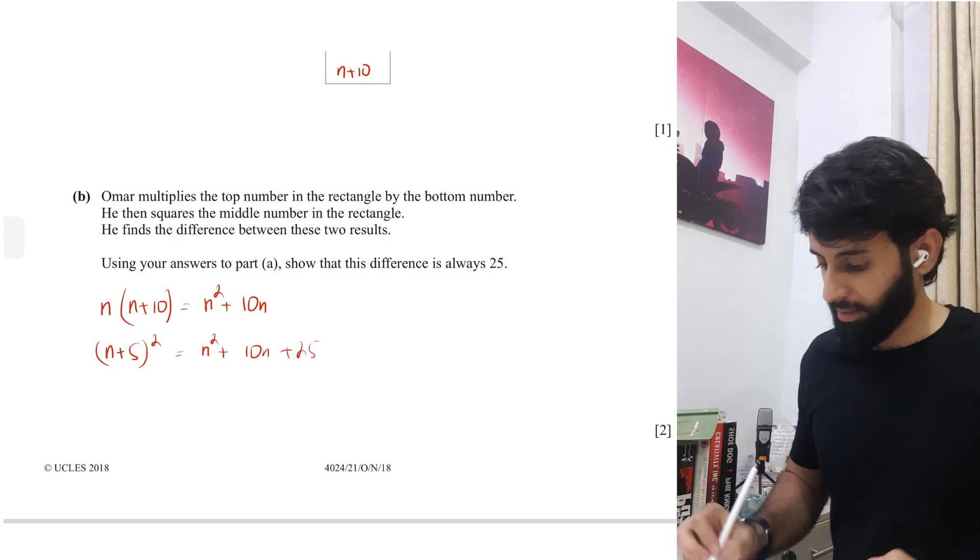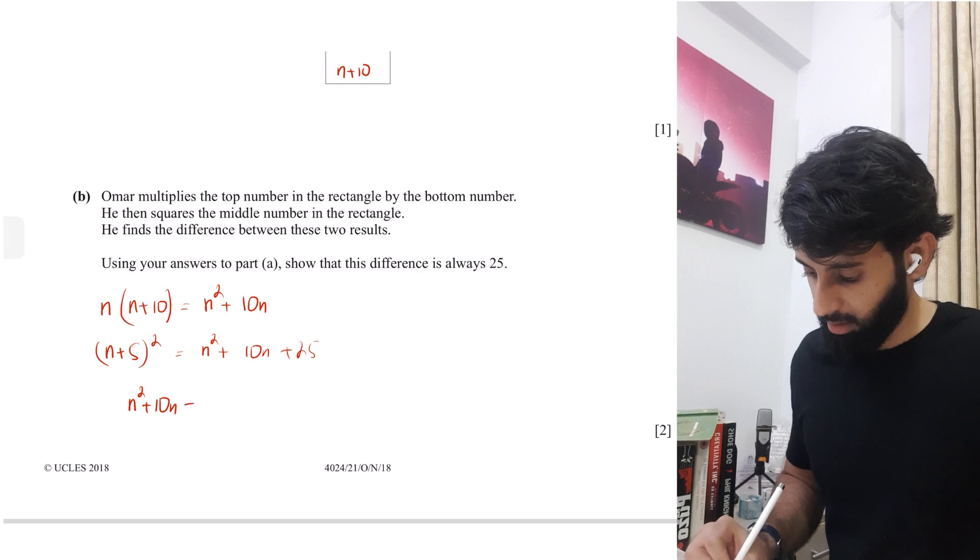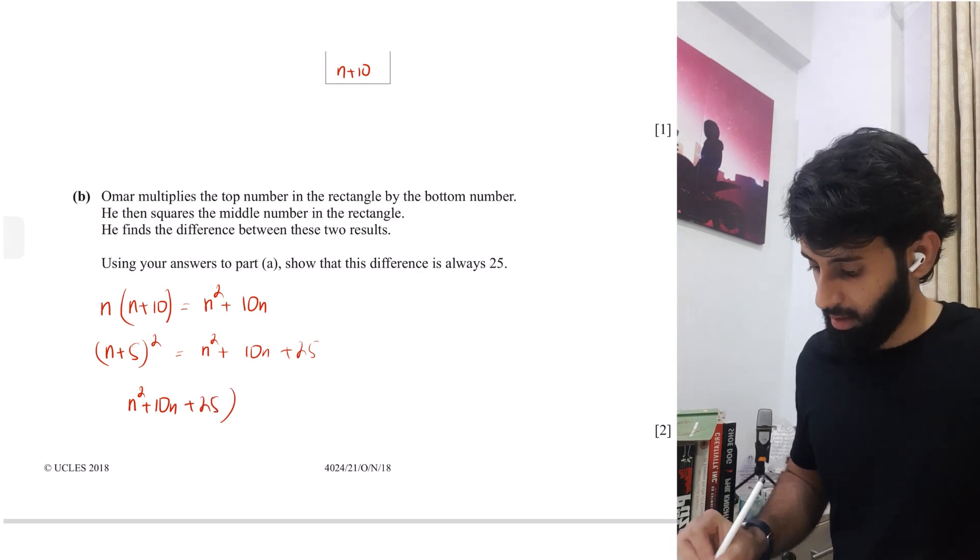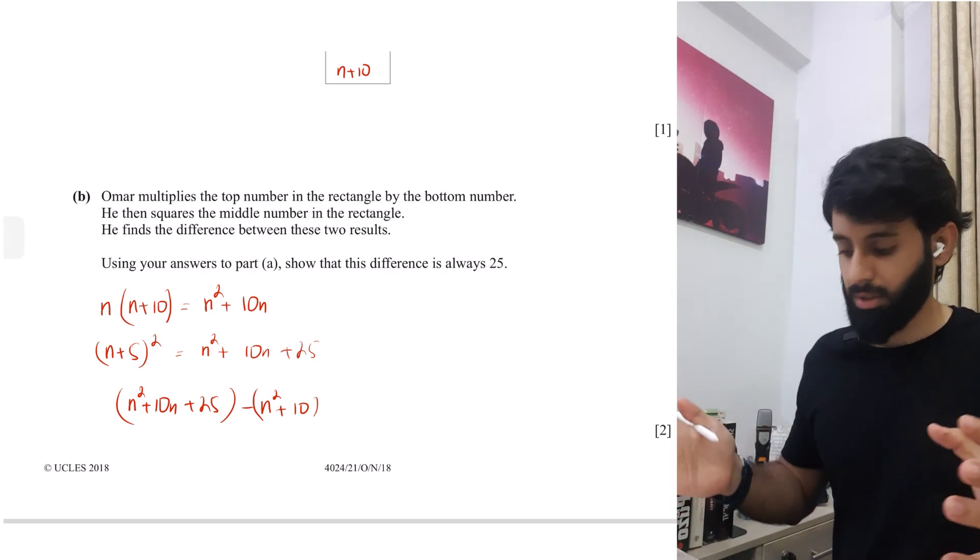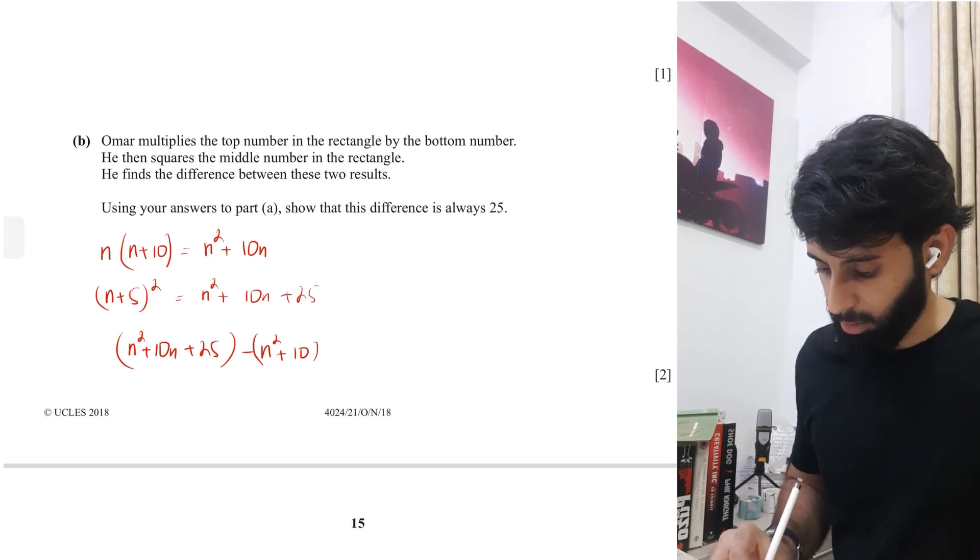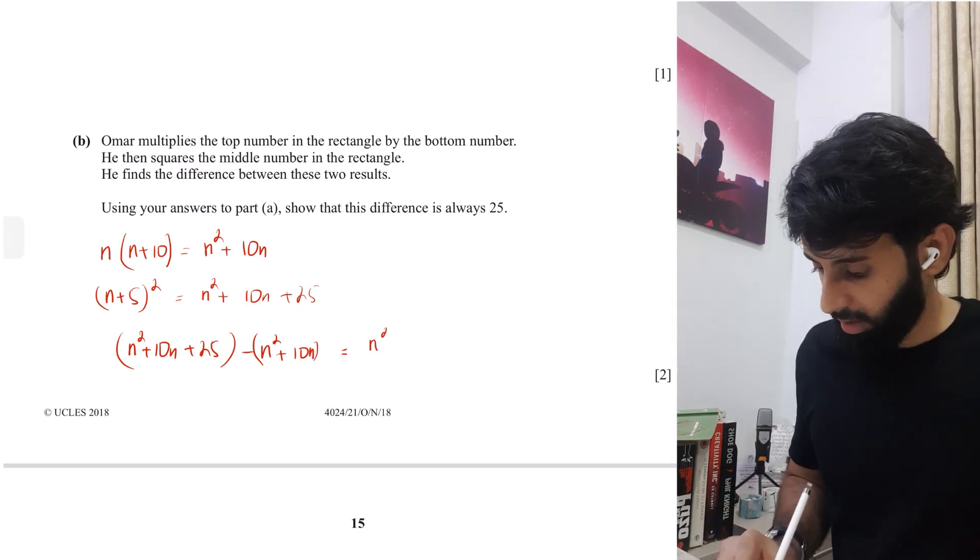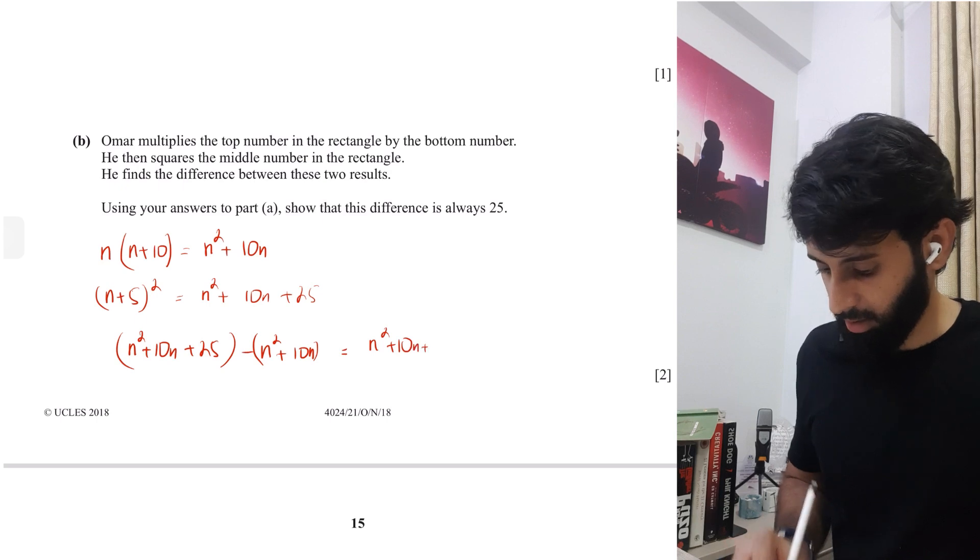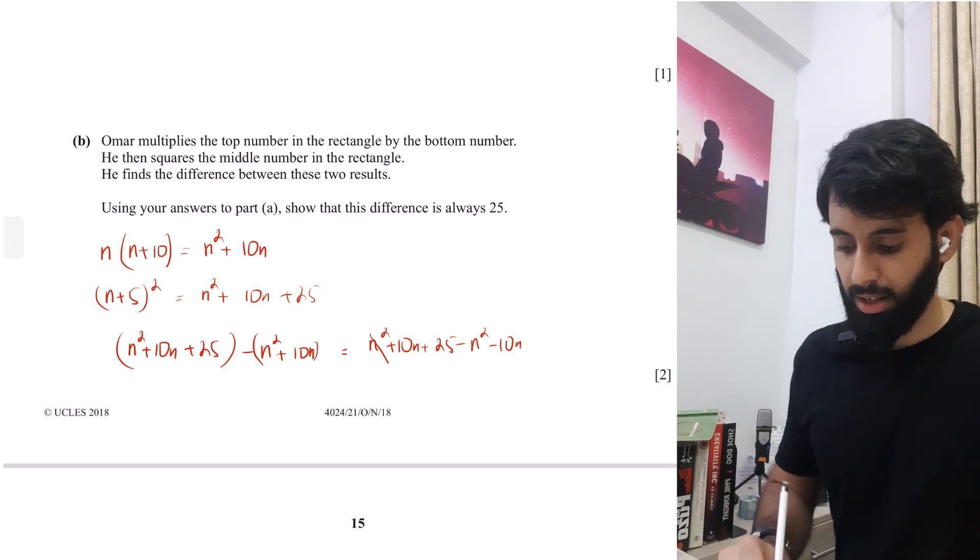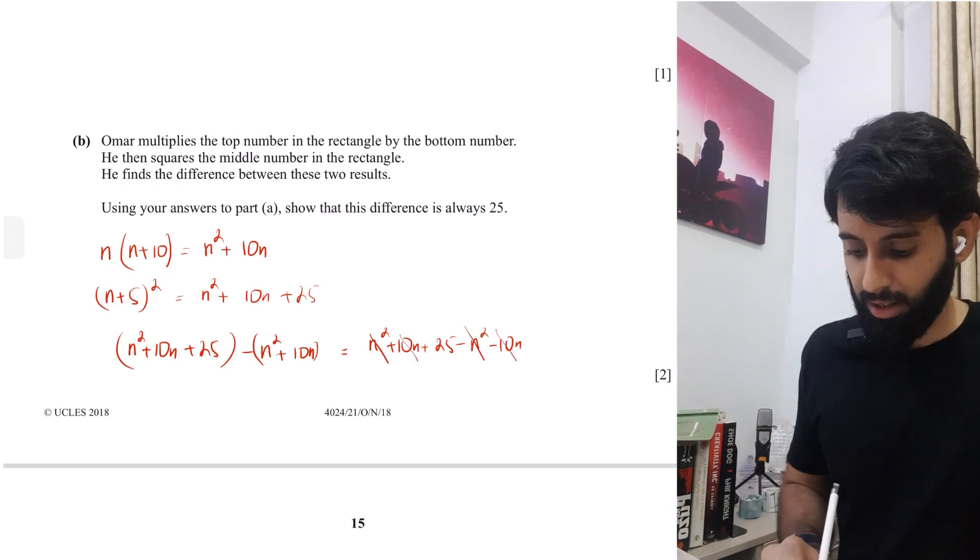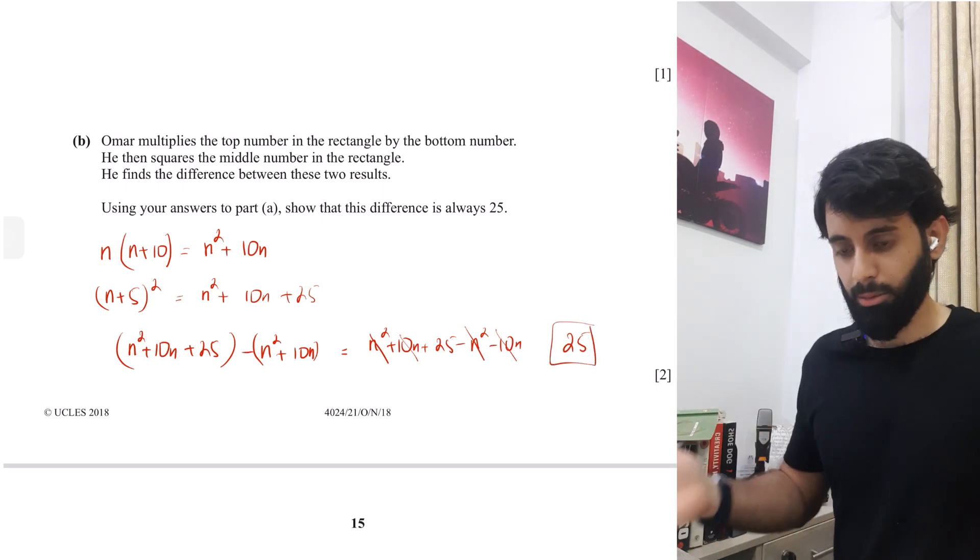Now let's find out the difference and see if the answer is indeed equal to 25 or not. So n square plus 10n plus 25 minus n square plus 10n, and do not forget to put a bracket because you're subtracting the entire expression. So you have n square plus 10n plus 25 minus n square minus 10n and what happens next is that n square and n square gets cancelled out, plus 10n and minus 10n gets cancelled out and you're left with 25 and hence you've shown exactly what you were supposed to.